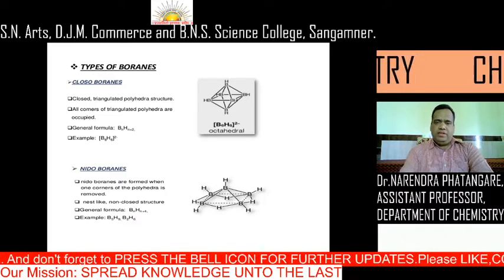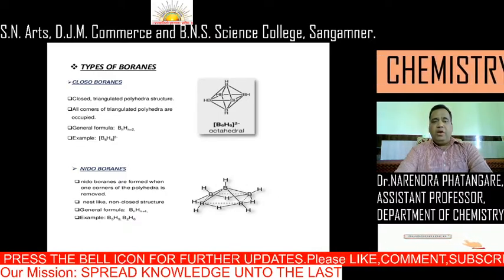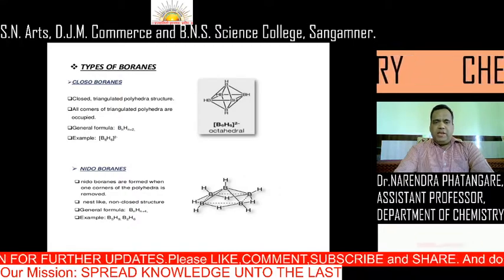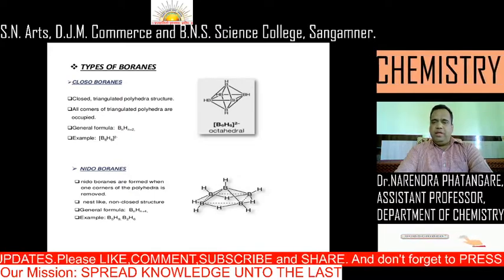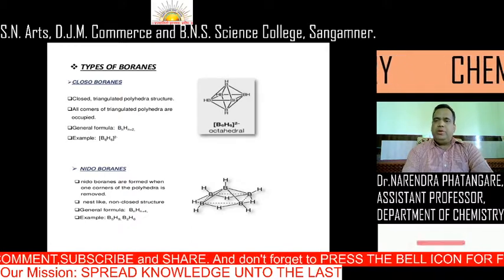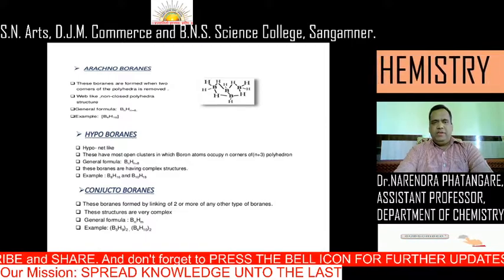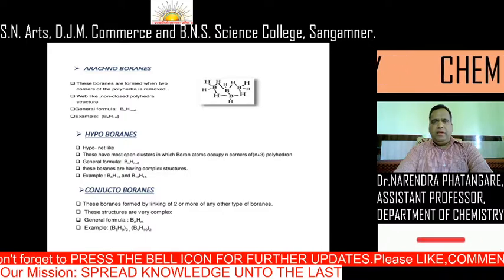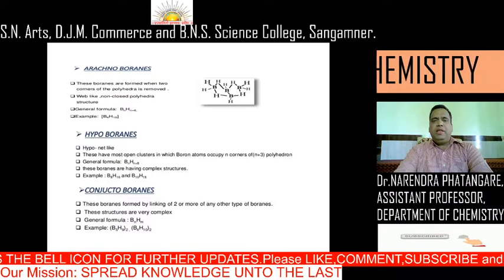The second type is nido boranes. Nido boranes are formed when one corner of the polyhedron is removed. It has a web-like, non-closed polyhedral structure. Examples include B5H9 and B2H6.